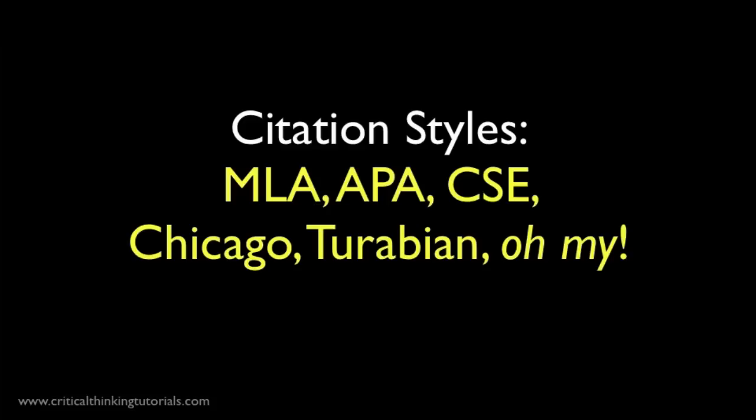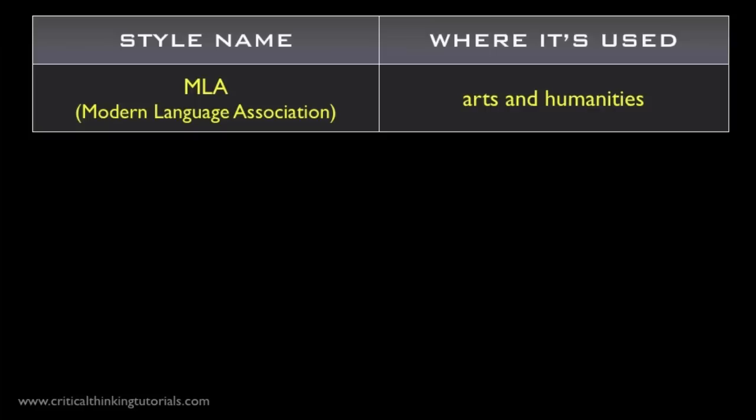Let's start with the MLA style. MLA stands for Modern Language Association. It's actually a pretty recent citation format. The MLA style manual is only in its third edition as of this recording, with the first edition in 1985. This is the most commonly used style for academics working in the humanities, like English literature, literary criticism, media and cultural studies, and a hodgepodge of other arts disciplines.